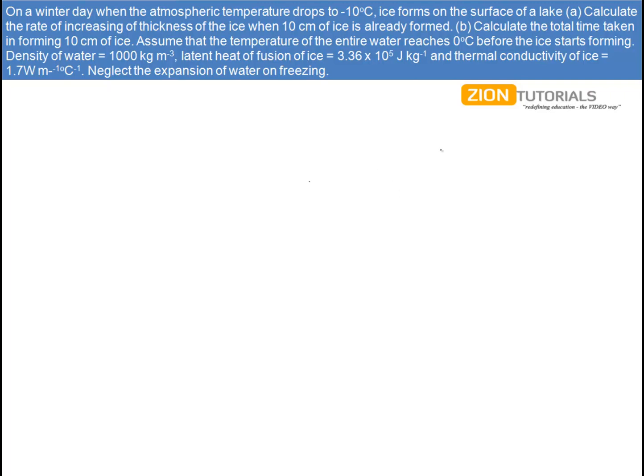First of all, 10 cm ice is already formed. So it will be something like this, that 10 cm of thick ice is formed. And this temperature is minus 10 degrees Celsius, that is the atmospheric temperature. The water temperature is still 0 degrees Celsius.